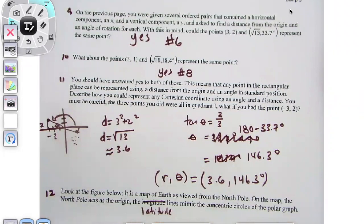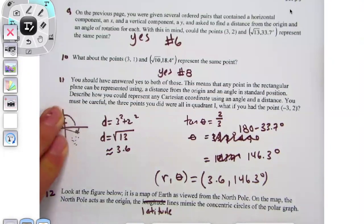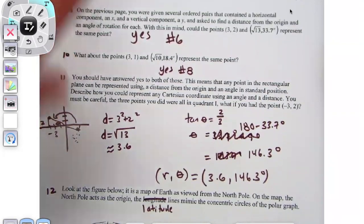Look at the figure below — it's a map of the Earth from the North Pole. On the map, the North Pole is the origin. The latitude lines mimic concentric circles. So you define polar coordinates as a distance and an angle — or we could call it a radius and an angle.